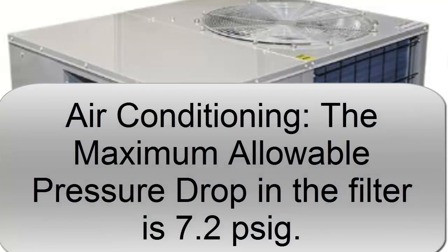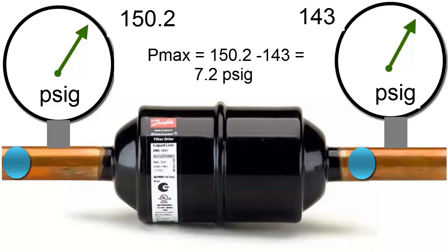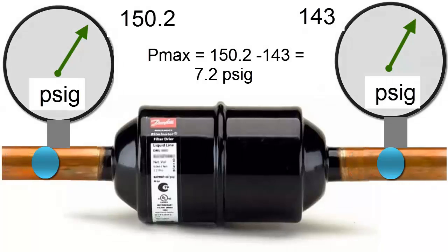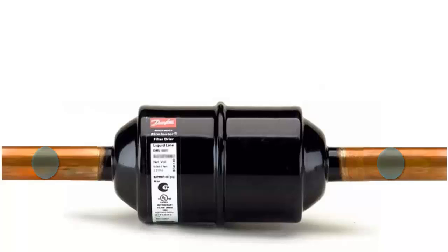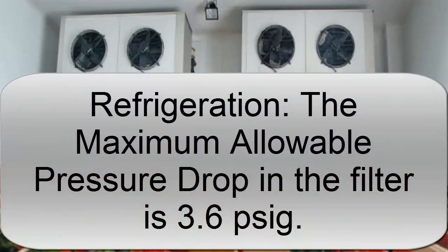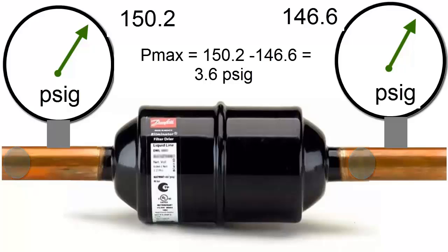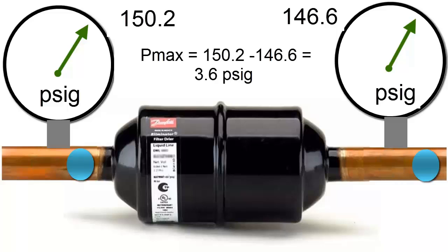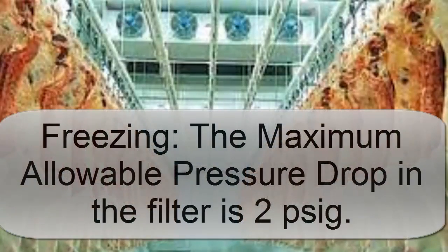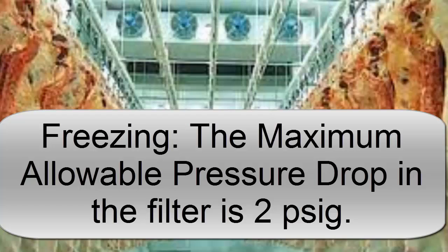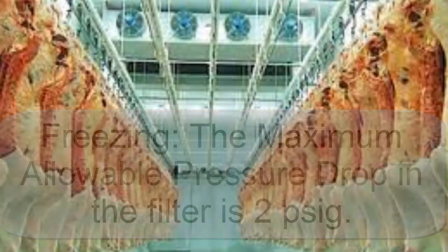In air conditioning systems, the refrigerant pressure drop indicating a clogged filter is 7.2 pounds per square inch. In refrigeration systems, the pressure drop suggesting a clogged filter is 3.6 pounds per square inch. In freezing systems, the pressure drop signaling a clogged filter is 2 pounds per square inch.